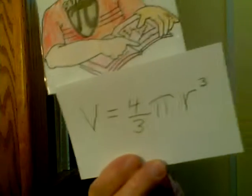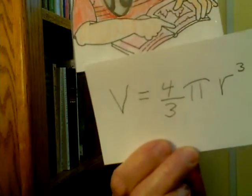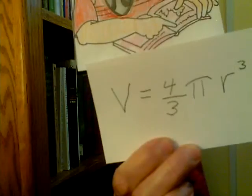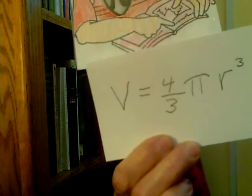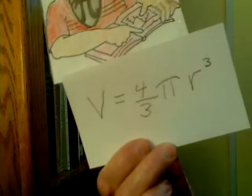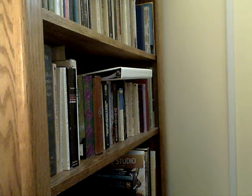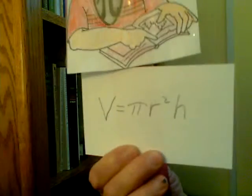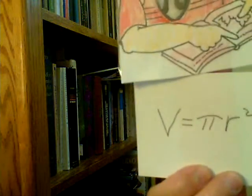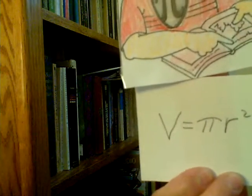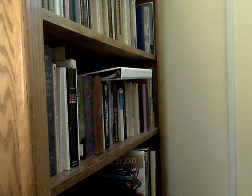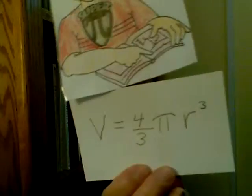The volume of a sphere is V equals four-thirds pi r cubed.